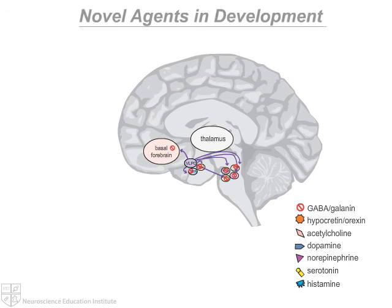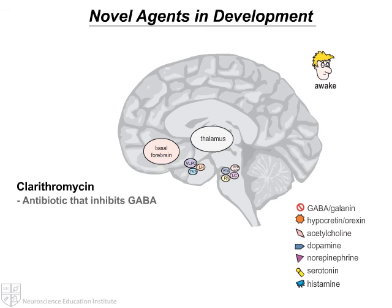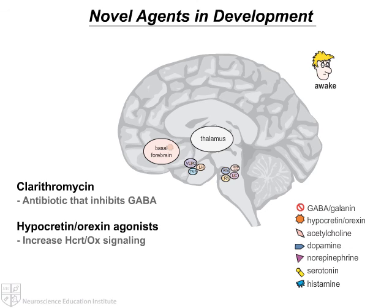In addition to these available treatments for hypersomnia, there are several other agents being researched. For instance, clarithromycin is an antibiotic that reduces GABAergic neurotransmission and may therefore promote wakefulness. Hypocretin-orexin agonists also have potential for both the reduction in daytime sleepiness as well as for cataplexy.